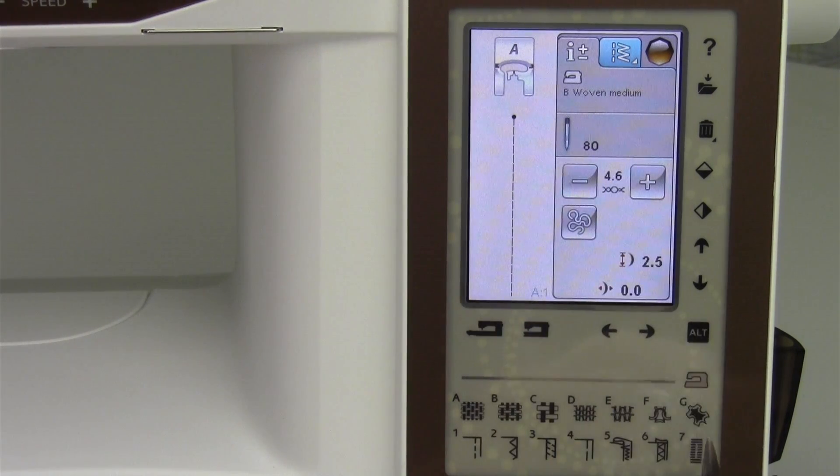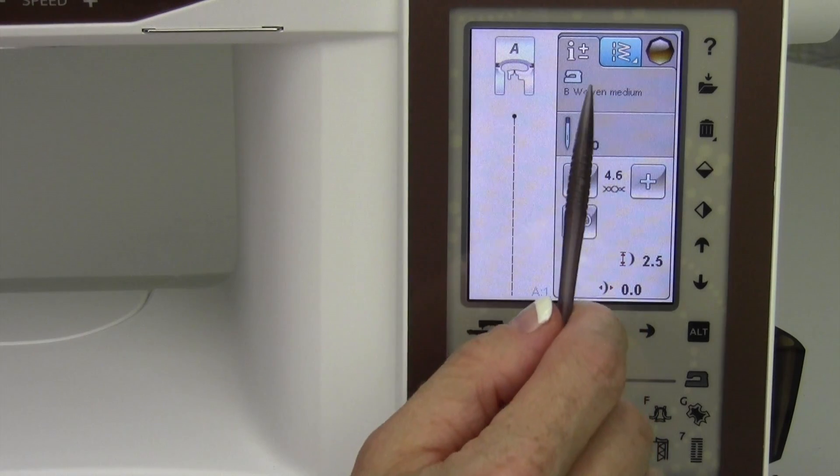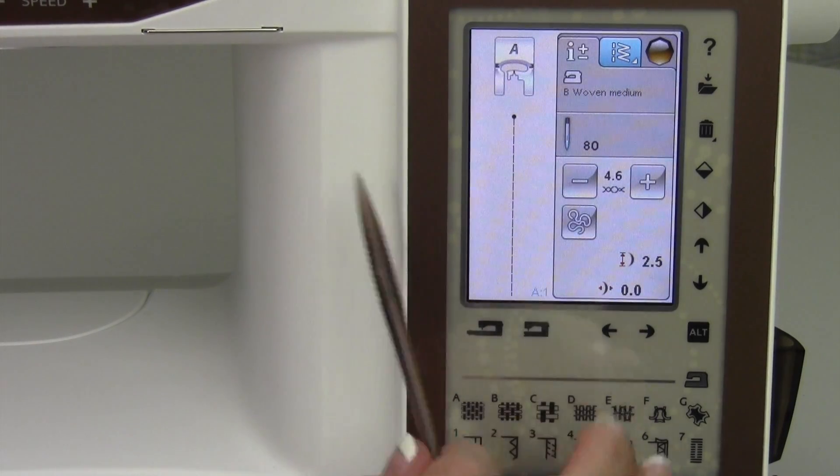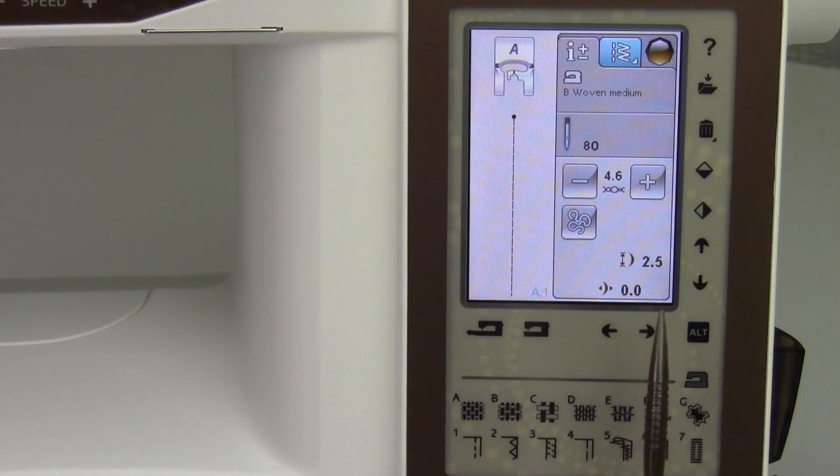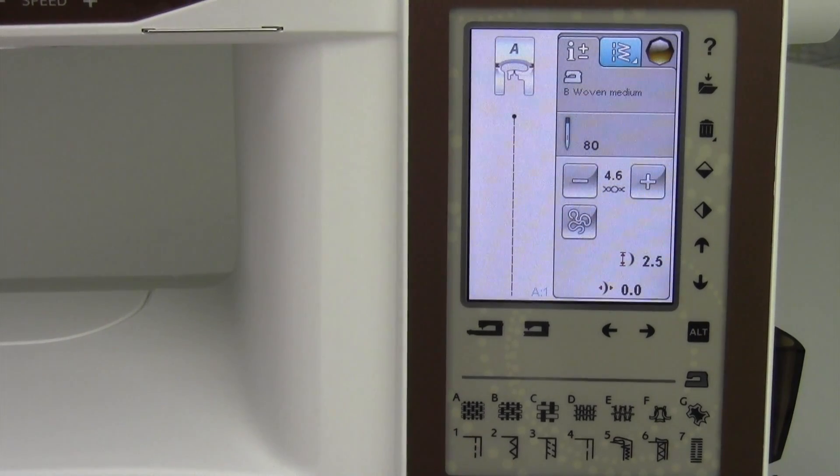If you don't know which fabric you'll be working on, I would recommend touching the B setting, which is for woven medium. That way, everything's kind of back to normal here. We're going to talk about selecting stitches, because there's a couple ways to go about doing it.